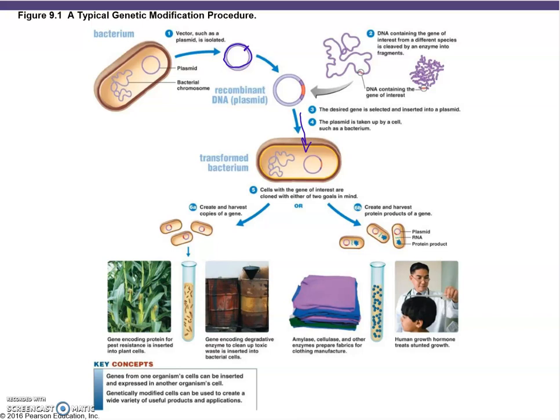You can also engineer bacteria to clean up toxic waste by inserting enzymes with the ability to detoxify it. Another example uses amylase, cellulase, and other enzymes to prepare fabrics for clothing manufacturing. You can also produce dyes for clothing manufacturing using biotechnology, and human growth hormone is another product made this way.